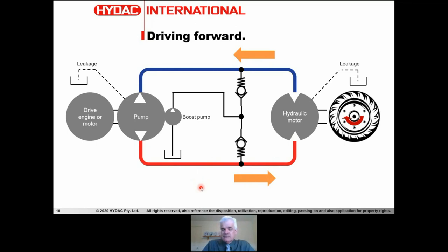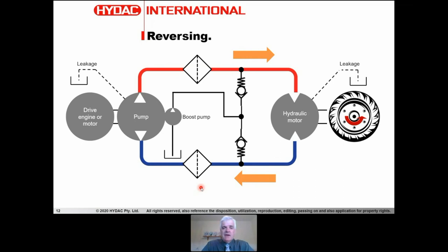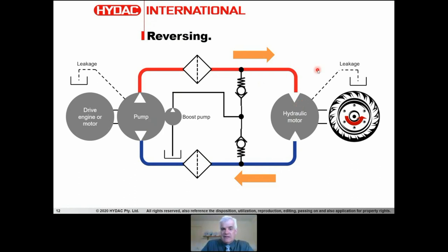Through a series of check valves, the boost pump sends oil into the lowest pressure side of the loop to supplement losses. Driving forward, the high-pressure line drives the motor clockwise; reversing the flow changes the drive direction. In a closed loop system, cleanliness is critical — any contaminant circulates continuously, damaging the motor, which generates more contamination that then damages the pump.